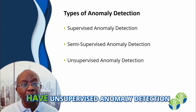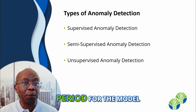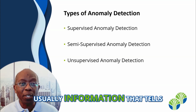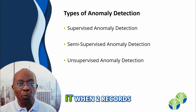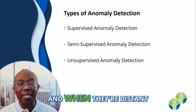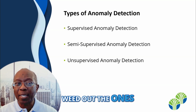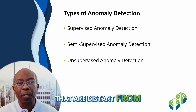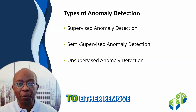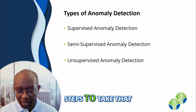We also have unsupervised anomaly detection. This is where we don't have a training period for the model. Instead, we give the model some other information — usually information that tells it when two records, two data items, are close to each other and when they're distant from each other. We have several different algorithms that will weed out the ones that are distant from what we're terming normal data, and then we're able to either remove the anomalous data or take steps to take that into account.